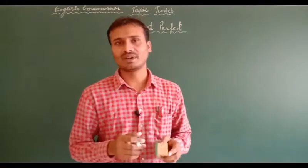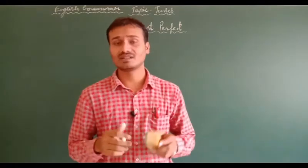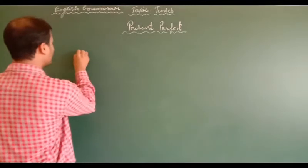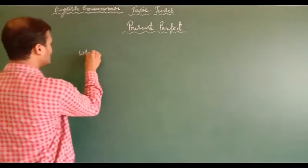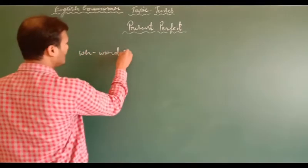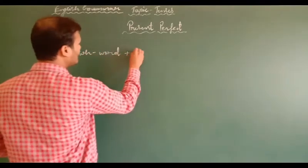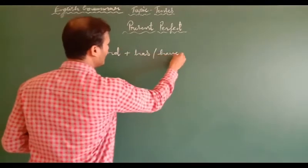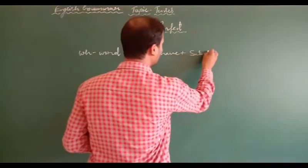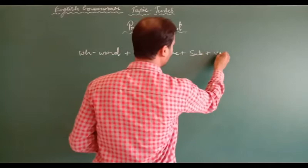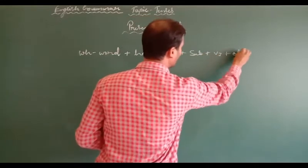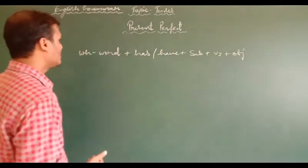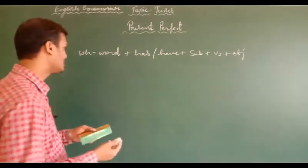Students, if you want to form an interrogative statement, you have to follow this structure: at first, you have to use a WH word, then has or have, then subject, then verb third form, and then object. This is the structure of your interrogative sentence.